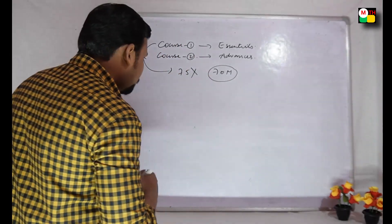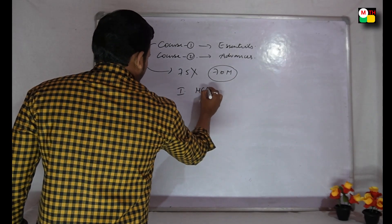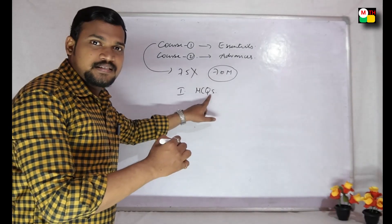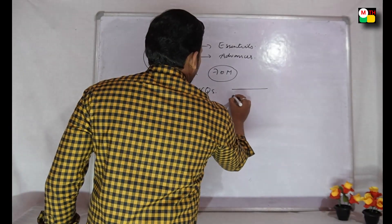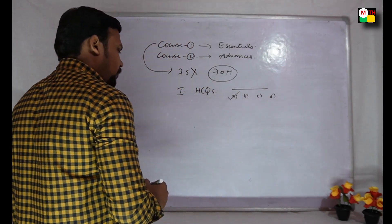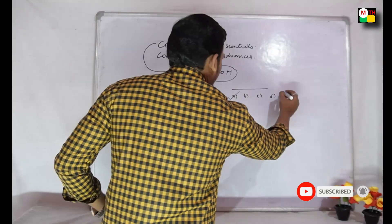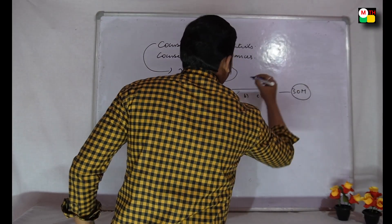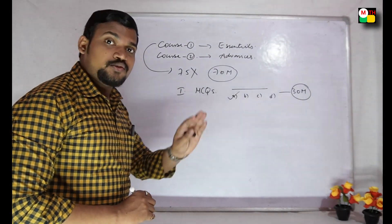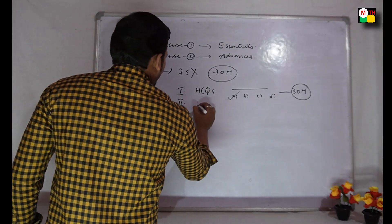Now let's observe the model paper. First Roman section: MCQs — multiple choice question answers with options A, B, C, D. A question is given and out of four options A, B, C, D you must tick the correct answer. This first section carries 30 marks — 30 questions, 30 ones are 30.